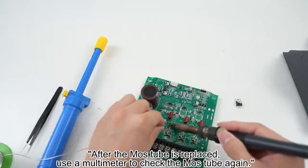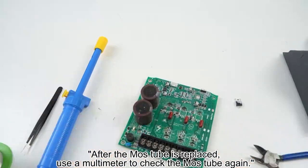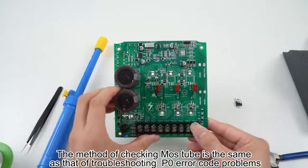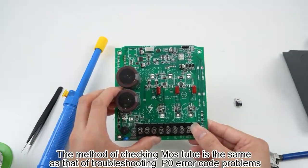After the MOS tube is replaced, use a multimeter to check it again. The method of checking the MOS tube is the same as that used for troubleshooting P0 error code problems.